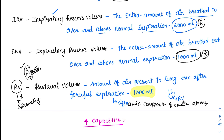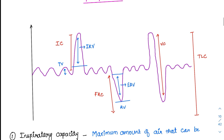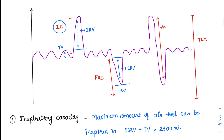These are the four volumes. Now coming to the capacities of the lung — capacities are pretty simple, we add up some of the volumes to get the capacities. The first capacity is called inspiratory capacity: whatever air I am able to inspire is called inspiratory capacity. It includes both the inspiratory reserve volume as well as the tidal volume, and its normal value is 2500 ml.